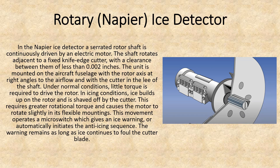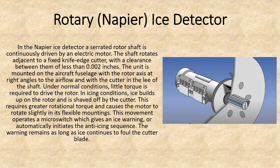The third type of detector is called the rotary ice detector, which is more complex than the previous two. The assembly consists of a motor connected to a shaft made up of knife edges. The clearance between the knife edge and the casing is less than 0.002 inches. When snow accumulates on the knife edges, the torque required to rotate the shaft increases, causing the motor to tend to rotate in the opposite direction. At a particular point, it operates a micro switch which gives an ice warning or automatically initiates the anti-icing sequence.